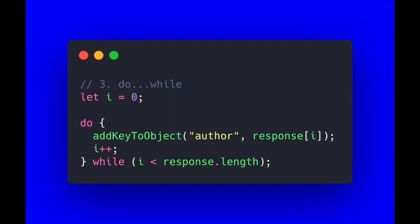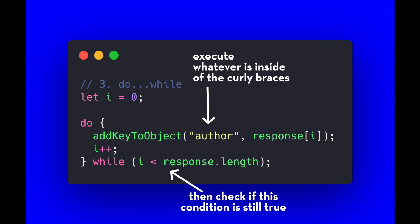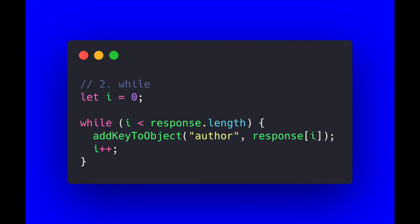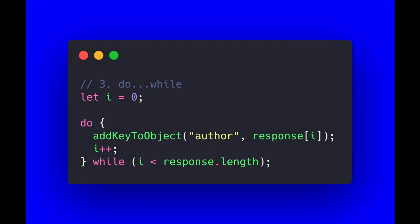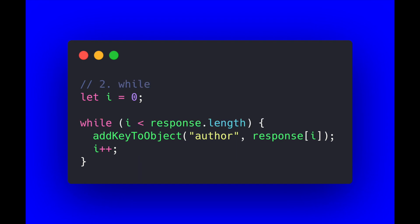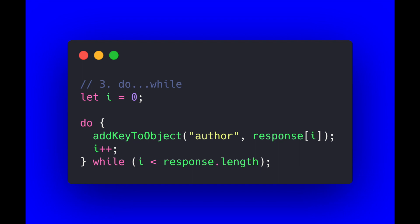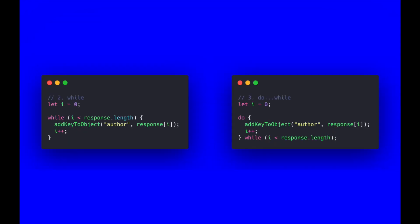The third type of loop is a do while loop, which is very similar to a while loop. We still initialize i to zero, but we run the function and increment the value inside the 'do' section of the loop. The key difference between a while loop and a do while loop is the order in which the condition is checked. In a while loop, the condition is checked first, then if true it executes. In a do while loop, there is an execution first, then we check if the condition is still true. So be aware that a do while loop will execute at least once regardless of whether the condition is true or not.